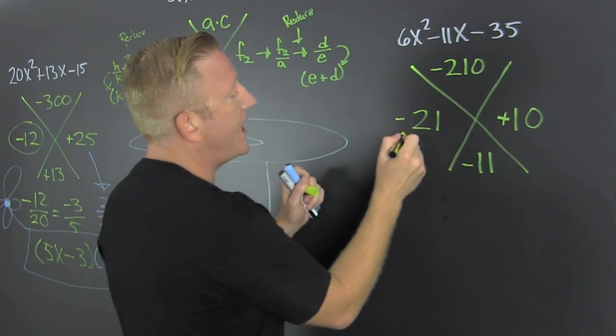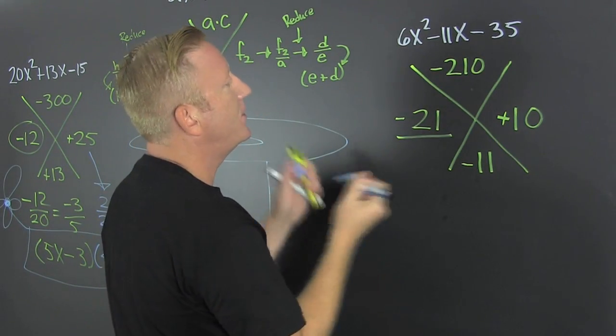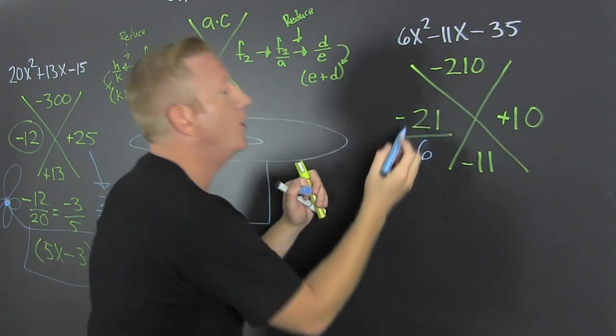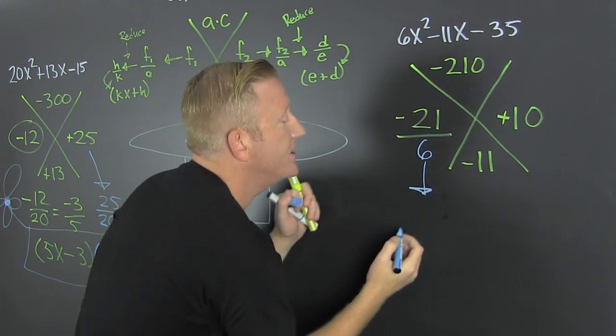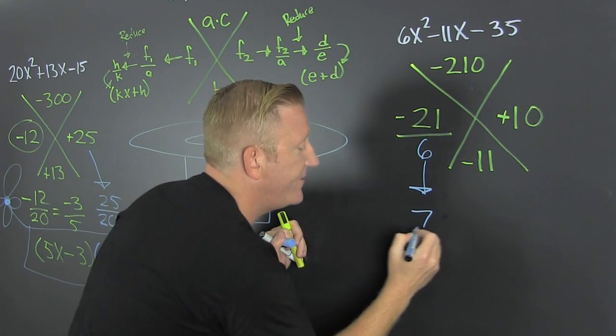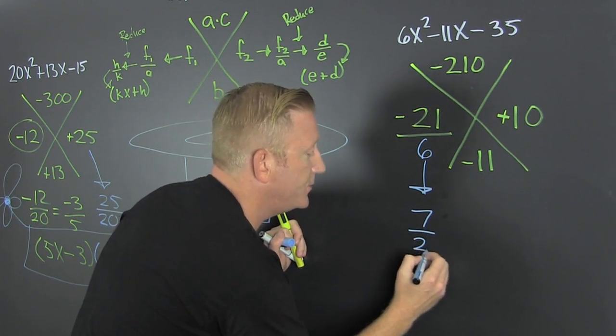So then I take this guy, boom, that one. Let's not do it in yellow. Let's divide it by that fine fellow, over six. So then 21 over 6, we see that they both have a three. So that's a seven over a deuce.